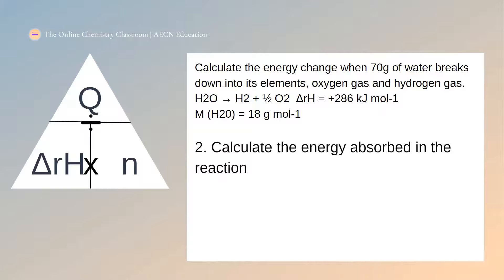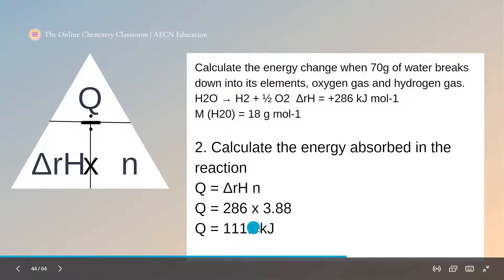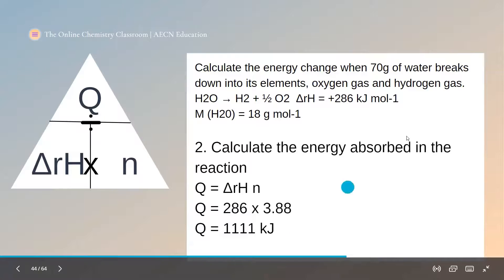The second step is to calculate the energy absorbed in the reaction. This time we're trying to find Q, so we use enthalpy of reaction times number of moles. Our enthalpy of reaction is 286 times 3.88, meaning the energy absorbed in this reaction is around 1,111 kilojoules. We do not have a positive or negative sign for Q — you can't have negative energy. You can write 'absorbed' or 'released' after your answer instead if you wish.